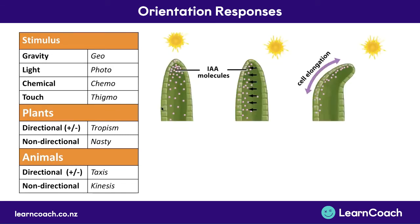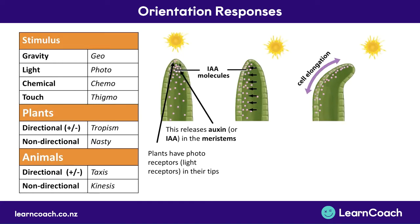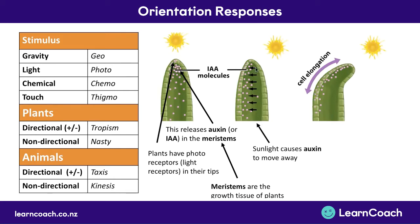Imagine this is the end of a plant stem just starting to grow upwards. When sunlight shines down on the tip of this plant shoot, plants have photoreceptors — light receptors — in their tips. These receive light, causing auxin (sometimes called IAA molecules) to be released in the meristem, which is the growth tissue of the plant. The sunlight then causes that auxin to move to the opposite side of the plant, away from the sunlight. That auxin then causes the cells on the shaded side to elongate, which means the plant growing up will bend towards the light.